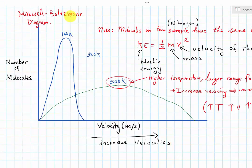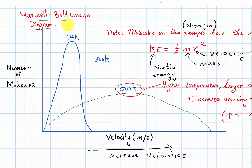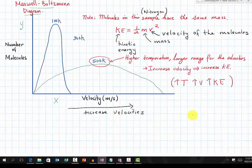In this lesson, we are going to learn how to interpret the Maxwell-Boltzmann diagram. Let's look at the axes of the diagram. The y-axis is the number of molecules, and the x-axis is the velocity. Going this way, the velocity is increased.